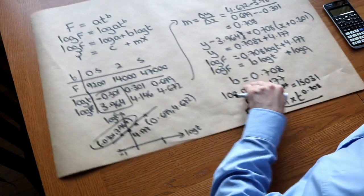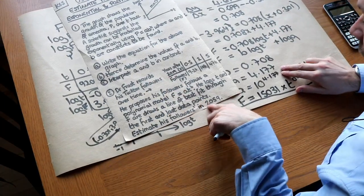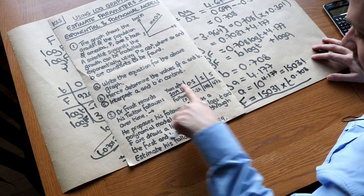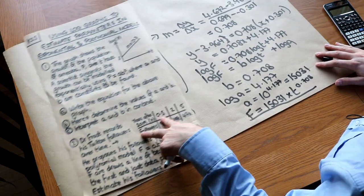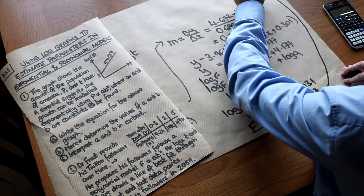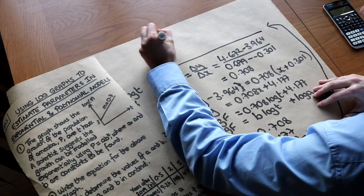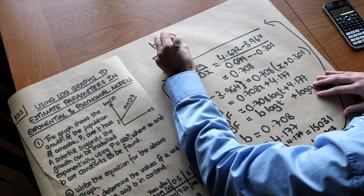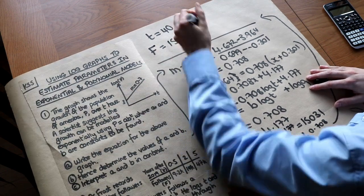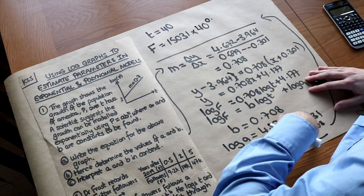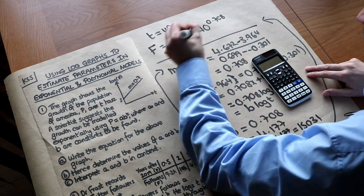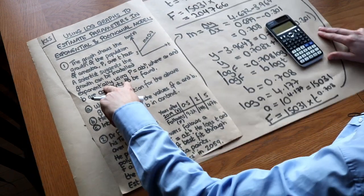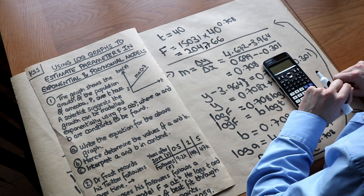Our model is F equals 15031 times T to the power of 0.708. The original question asks to estimate his followers in 2059. Since T is years after 2019, in 2059 we have T equals 40. Substituting: F equals 15031 times 40 to the power of 0.708, which gives approximately 204,766. So the model estimates almost 205,000 Twitter followers in 2059.